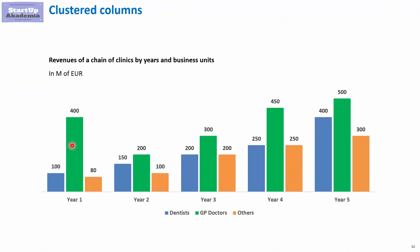As you can see here, we look at the revenues of a chain of clinics by years and business units. On the axis we've got years, and every color stands for a different business unit — so blue is, for example, dentists. This way of presenting helps us show the behavior of each business unit separately, but also lets us compare business units within a specific year. For example, in year four we can compare GP doctors to dentists and others, and we can see that GP doctors are behaving much better. Obviously, in this sort of chart we don't have the total, so we cannot easily compare the overall revenues of the business.